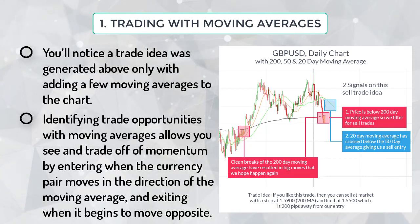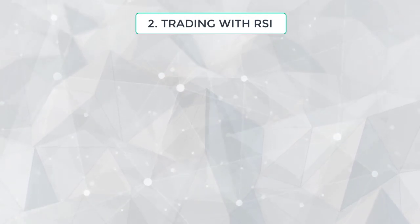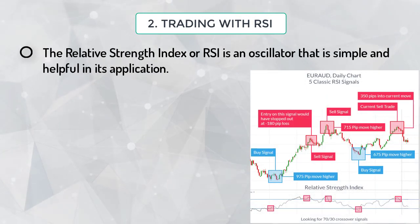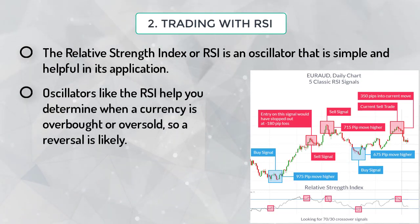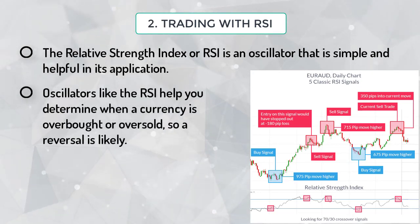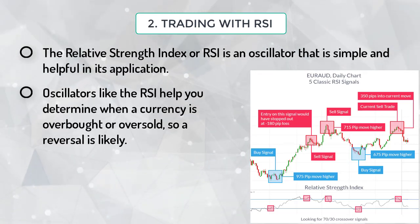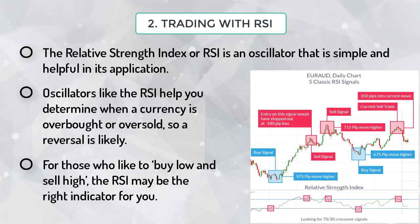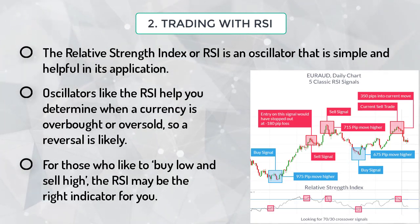Trading with the Relative Strength Index: the RSI is an oscillator that is simple and helpful in its application. Oscillators like the RSI help you determine when a currency is overbought or oversold, so a reversal is likely. For those who like to buy low and sell high, the RSI may be the right indicator for you.